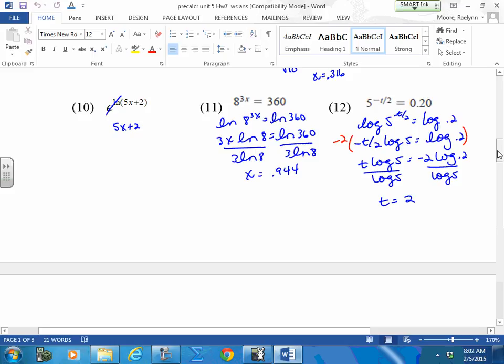Number 10. The E to the ln cancels out. And just bring that down. That was an expression. Number 11. Your variable's in the exponent. The only way to bring that down. And I can't drop 360 to a base of 8. And I can't drop it to a base of 4. Or a 2. 4 wouldn't help me, but 2 would. But I can't drop it to a 2 either. So use the log of both sides or the ln of both sides.